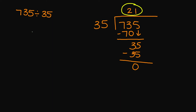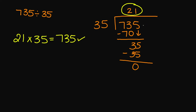To check my answer, I'm going to take my quotient, which is 21. 21 times 35 is going to equal 735. Notice that that answer is equivalent to what you have here in your dividend.